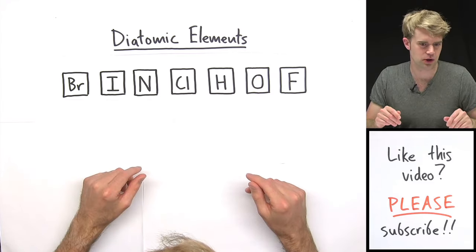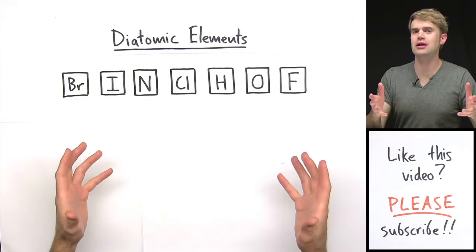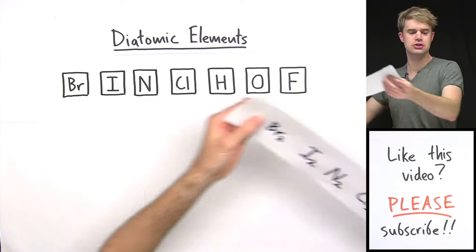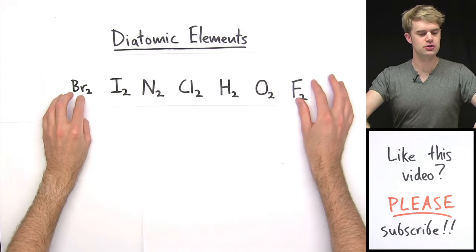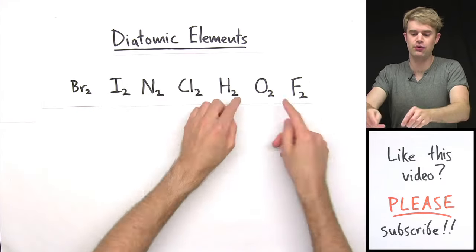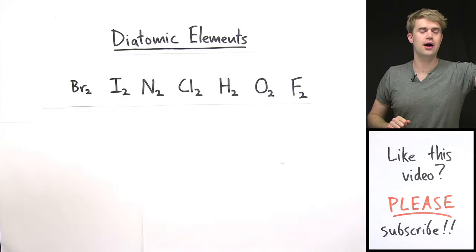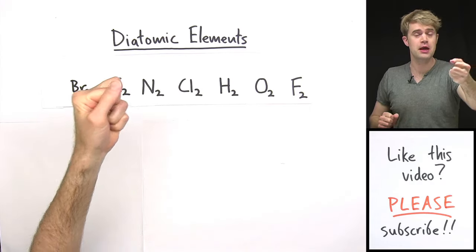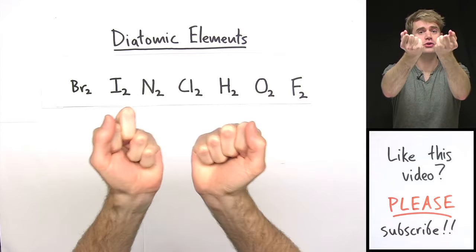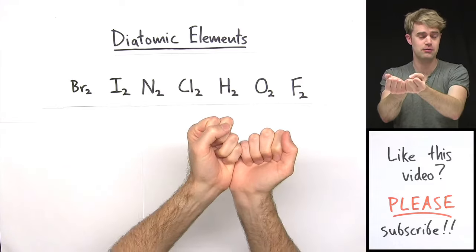Now the diatomic elements are special because you never find just one atom of a diatomic element on its own. You always find them in pairs. So you get Br2, I2, N2, and so forth. The big idea here is say for oxygen, oxygen gas, you never find just one oxygen atom floating around. You always find it paired up with another oxygen atom making a molecule with two oxygen atoms and that's O2 and that's what's floating around.